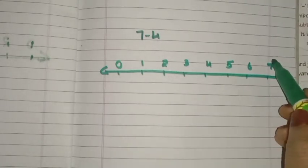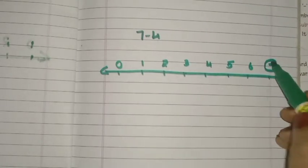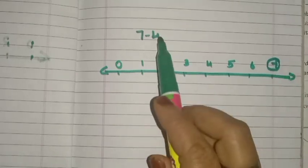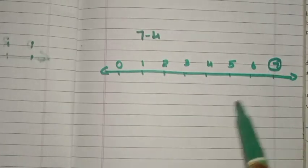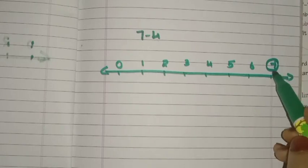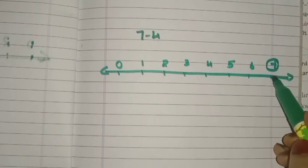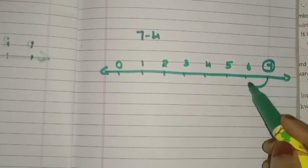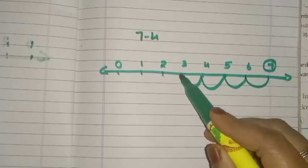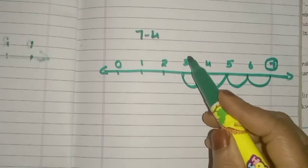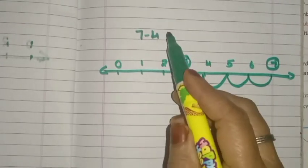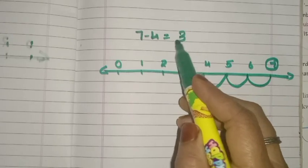Then jump four steps backward from seven: one, two, three, four. We reach three. So seven minus four equals three. That is the answer: three.